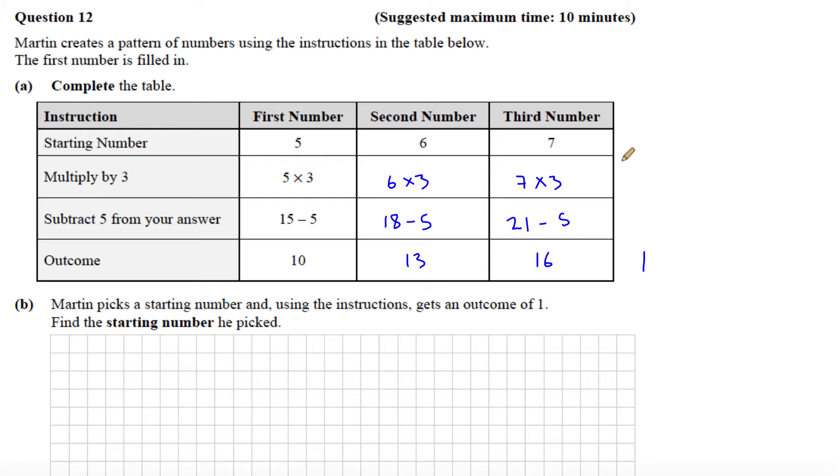We're going to do the reverse operations. If we're working backwards, instead of from the outcome, we're going to add 5 to the outcome instead of subtract 5. So 1 plus the 5 will give me 6.